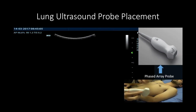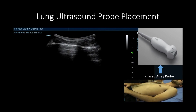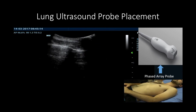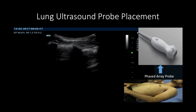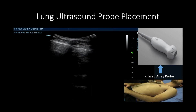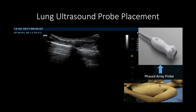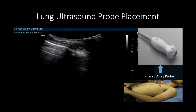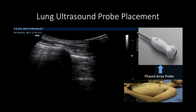Now let's move to B-lines. To assess for the presence of B-lines in the lung, use the phased array probe and place it at the midclavicular line around the second or third intercostal space with the probe indicator pointing at the patient's head. Examine the whole anterior chest wall from both lung apices sliding towards the base.